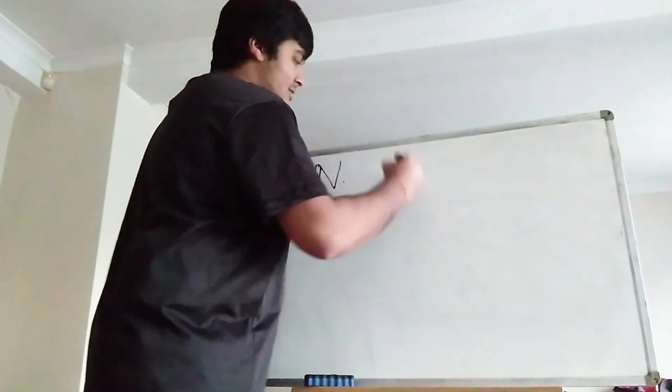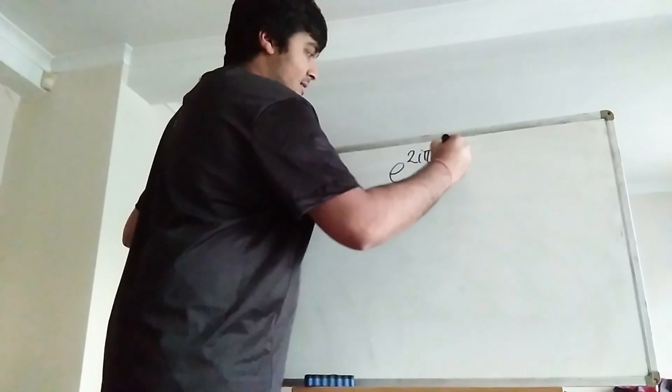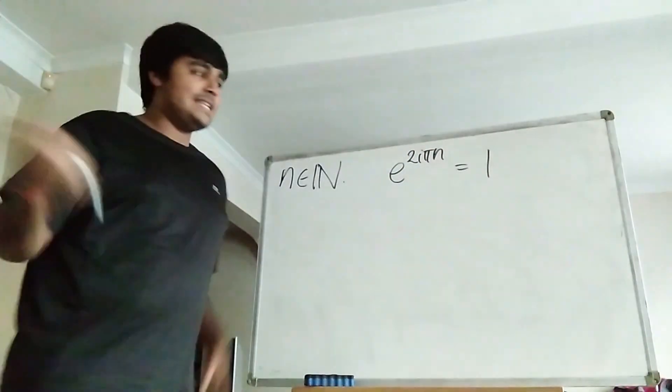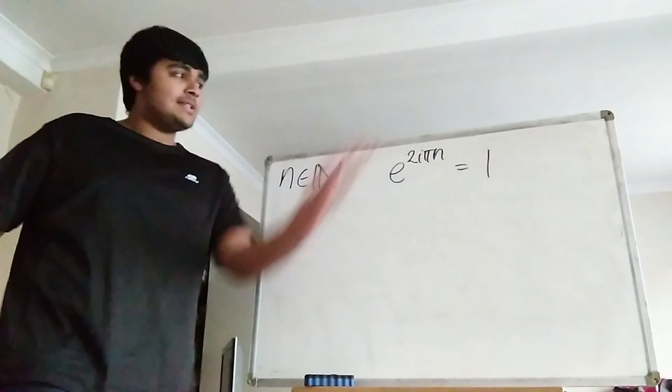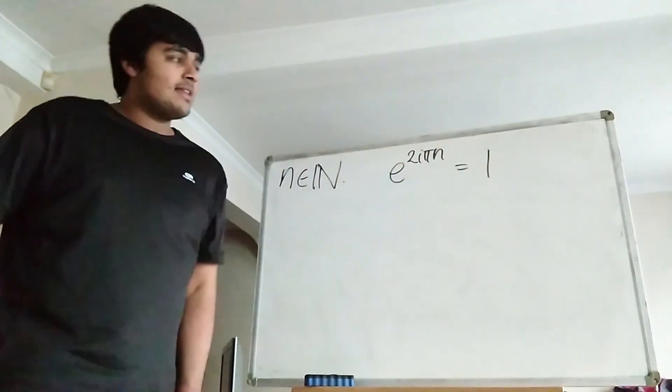Then we know that e to the 2i pi n equals 1. Okay, because obviously e to the 2i pi equals 1, then just raising both sides to the n gives us this thing here.